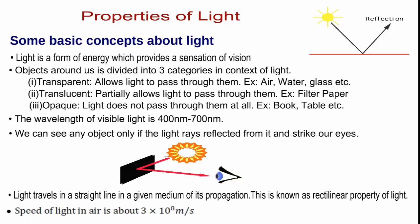Light travels in a straight line in a given medium of its propagation. This is known as rectilinear property of light. Speed of light in air is about 3 times 10 to the power 8 meters per second.